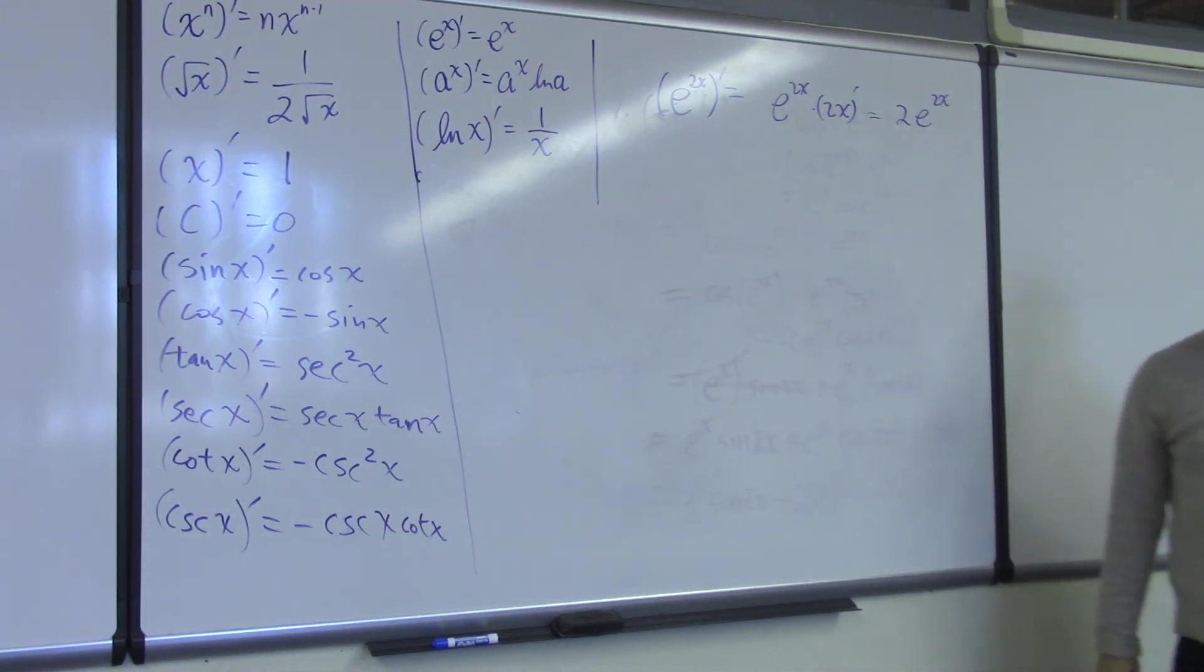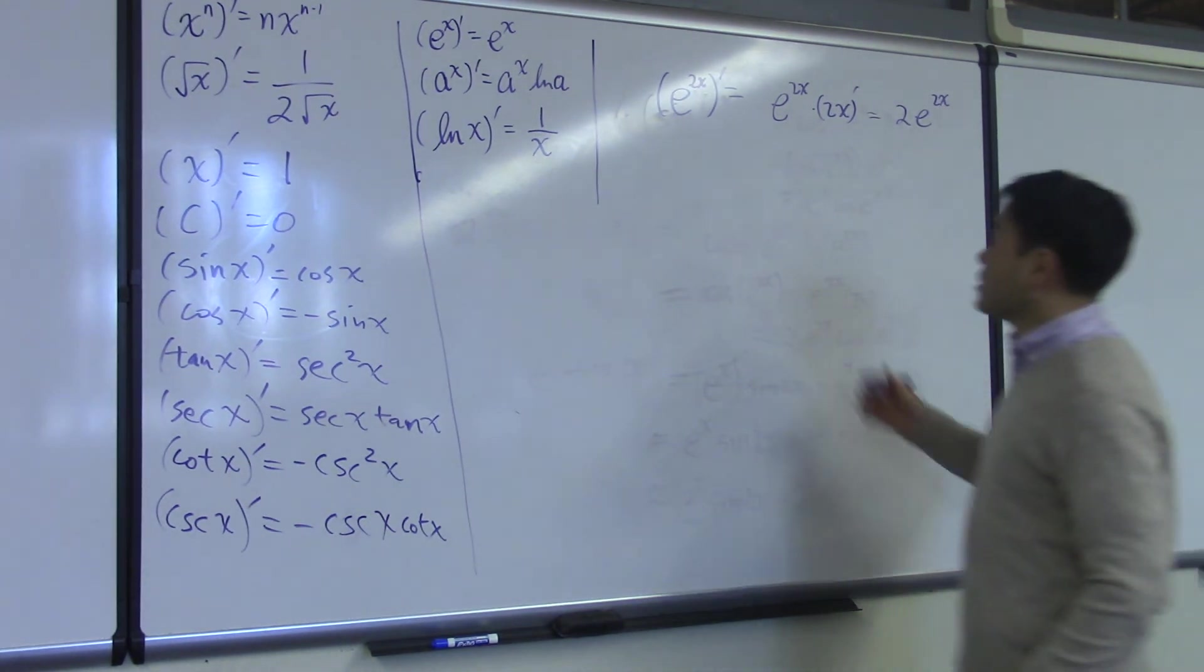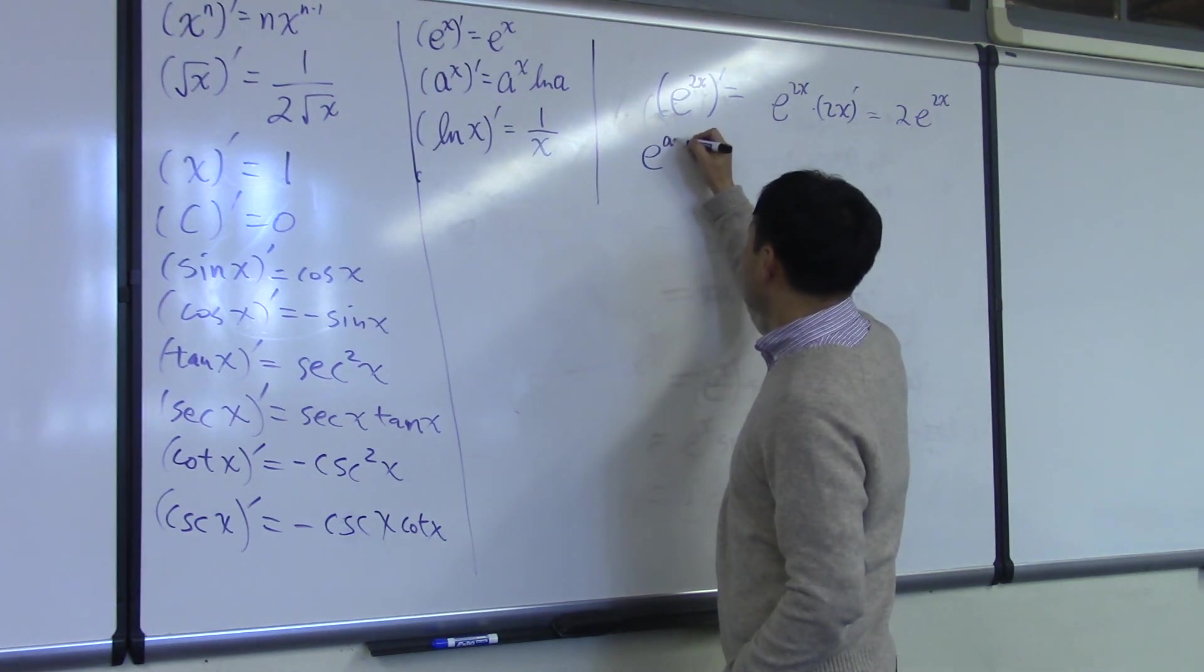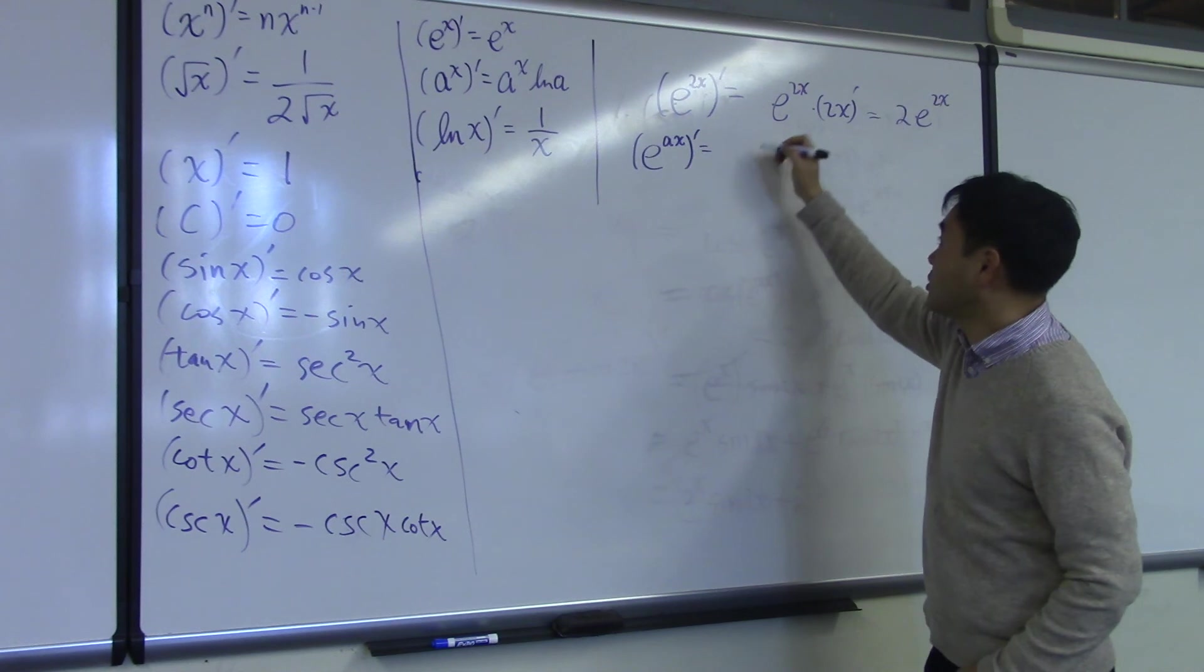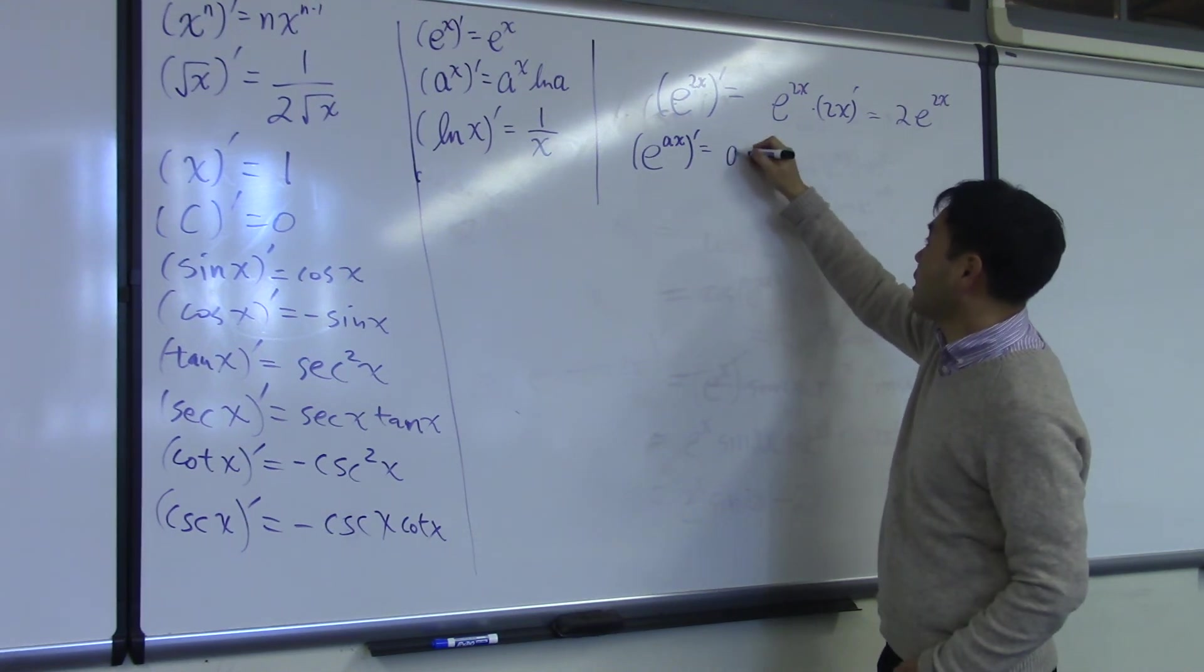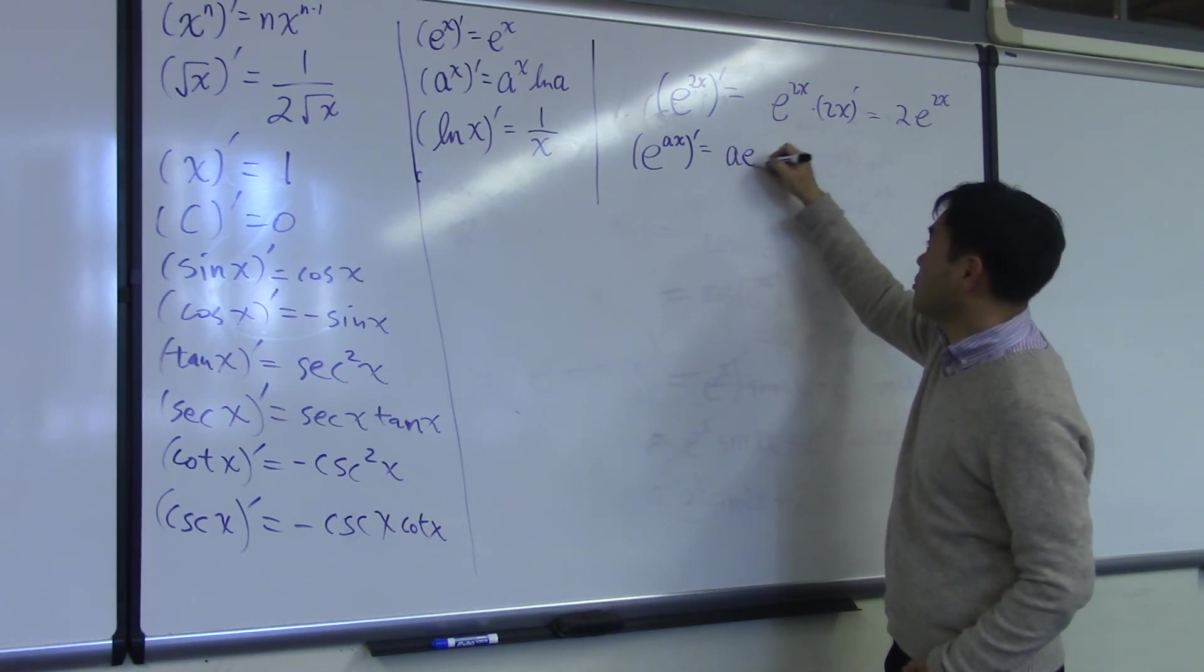And this form appears frequently enough that you probably want to memorize it like this: e to the ax prime gives you a times e to the ax. That's the formula.